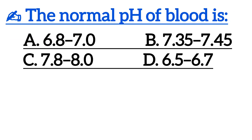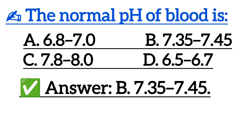The normal pH of blood is — correct answer is option B: 7.35 to 7.45.